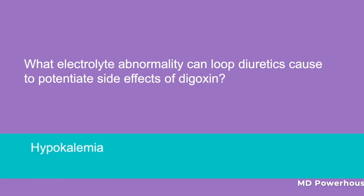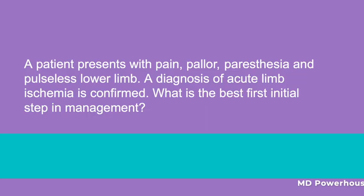A patient presents with pain, pallor, paresthesia, and pulselessness of the lower limbs. A diagnosis of acute limb ischemia is confirmed. What is the best first initial step in management? IV heparin.